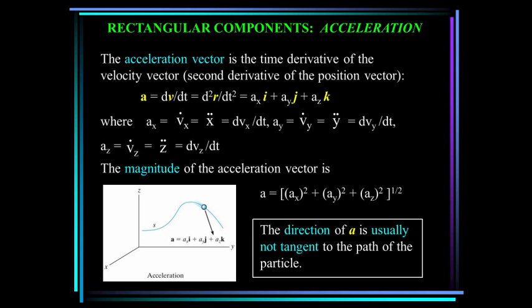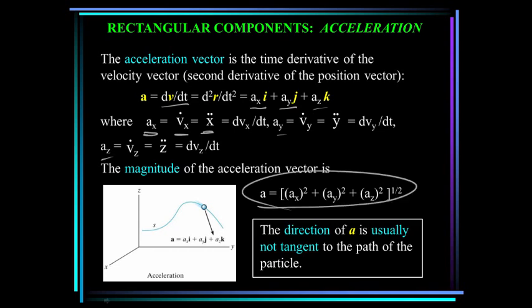The acceleration vector is the time derivative of the velocity vector, giving acceleration in x times i plus acceleration in y times j plus acceleration in z times k. Here, a_x is the first time derivative of velocity in x, denoted x-double-dot, and similarly for y and z. The magnitude of the acceleration vector is the square root of the sum of the squares. The direction of acceleration is usually not tangent to the path of the particle, unlike velocity.